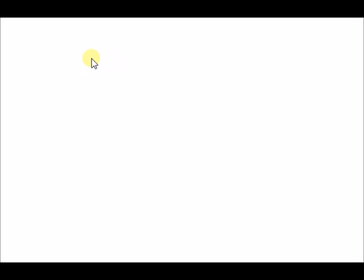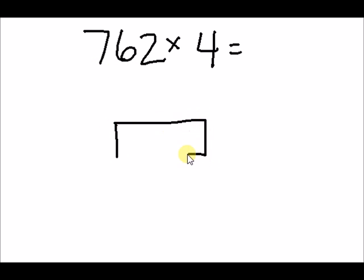Let's try another number. 762 times 4. This time, we have 3 digits. That means our lattice also needs to have room for 3 digits. And take a little practice to draw them.